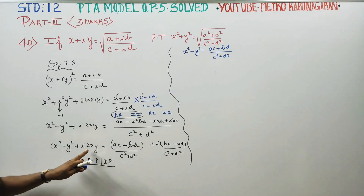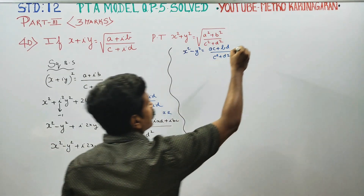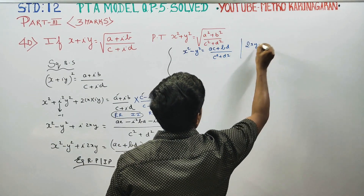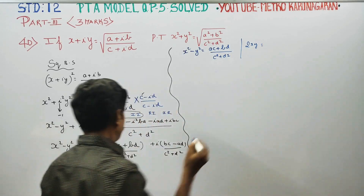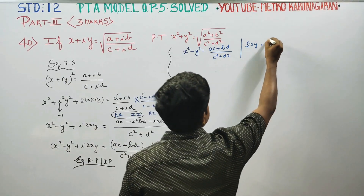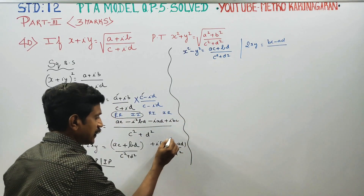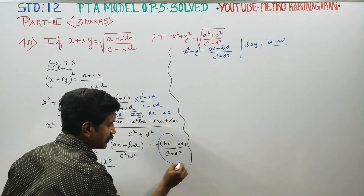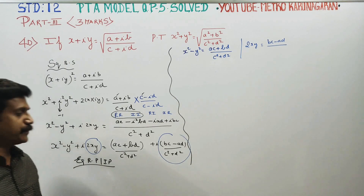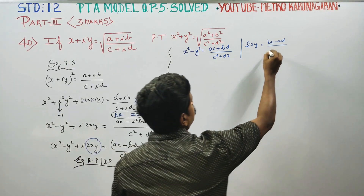Imaginary part is equal to 2xy. Imaginary part is equal to bc minus ad, divided by c square plus d square.